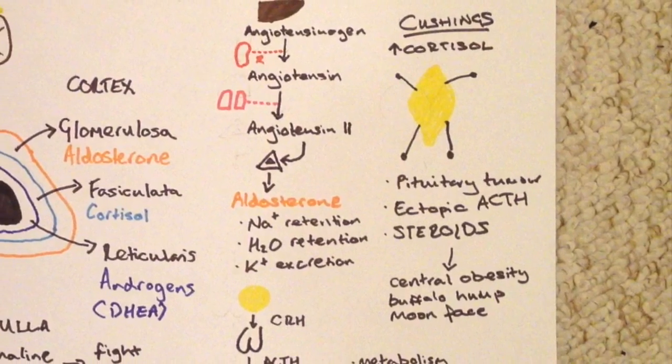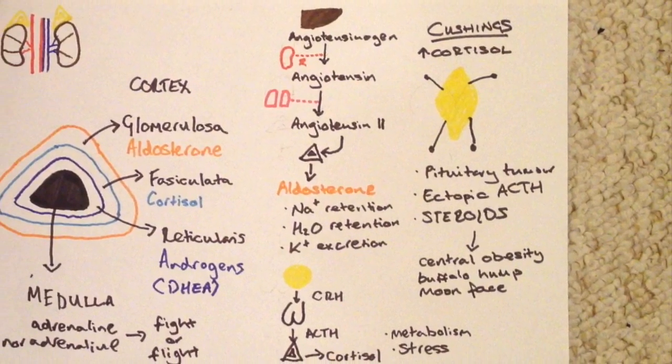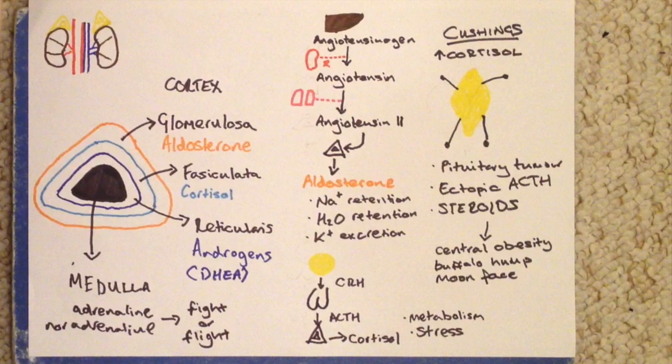So that's it for the video. Hopefully this has been a useful overview of the basic anatomy and physiology of the adrenal glands. I looked into some feedback loops and a bit about Cushing's disease. Thank you for listening.